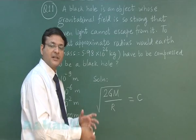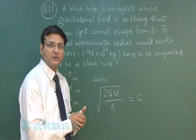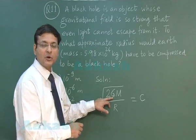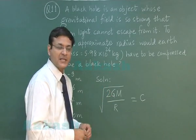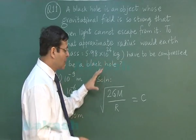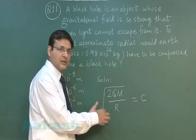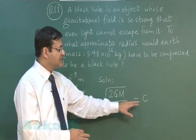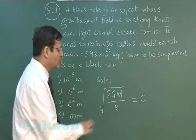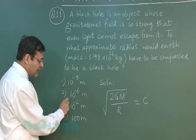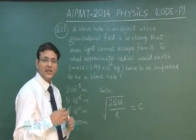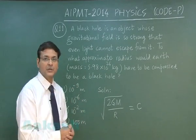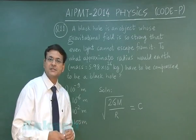If the radius is smaller than this critical value, it is confirmed as a black hole. Substituting G = 6.67×10⁻¹¹, M = 6×10²⁴ kg, and c = 3×10⁸ m/s, we only need the order of magnitude. The critical radius comes out to approximately 10⁻² meters — about the size of a grape. So if Earth were compressed to the size of a grape, it would become a black hole.